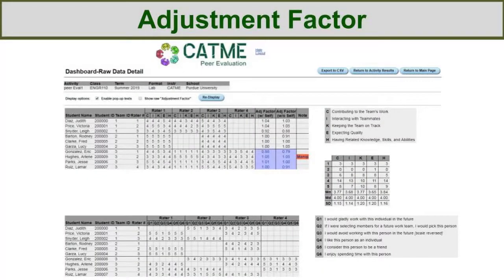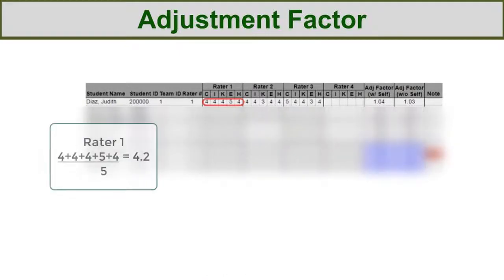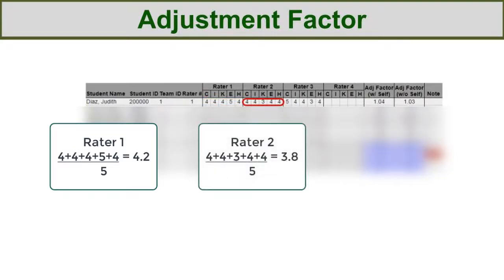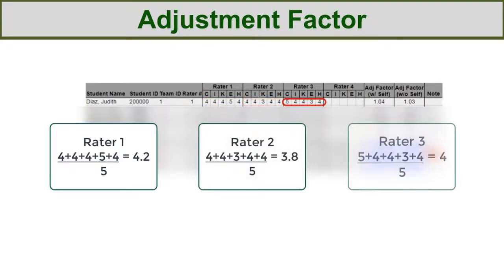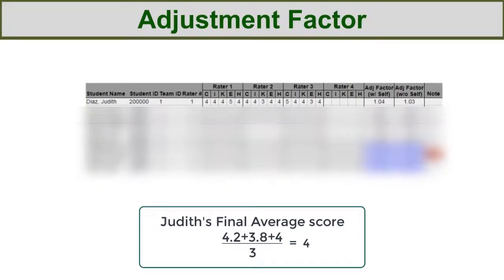As an example, let's calculate the adjustment factor for Judy with her self-rating included. First, we find her average score she received from herself across all 5 dimensions. Then, find the average score she received from each teammate. Next, calculate Judy's final average score by averaging all the average scores calculated above. This would be the numerator of the adjustment factor with her self-rating factored in.